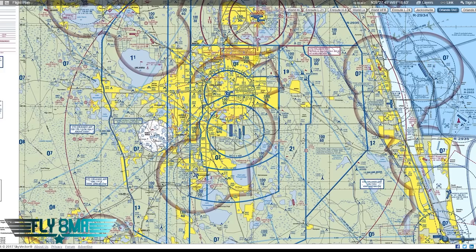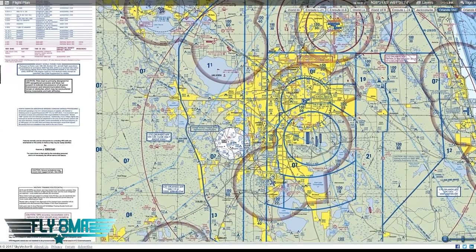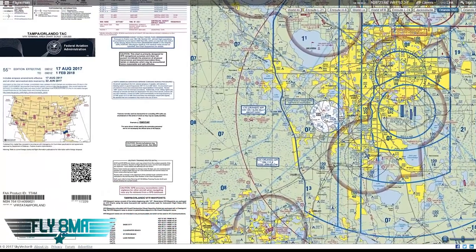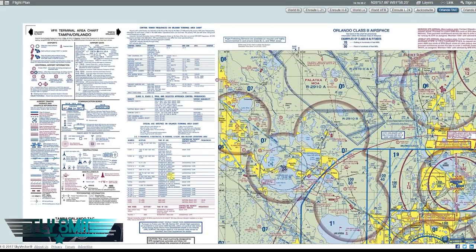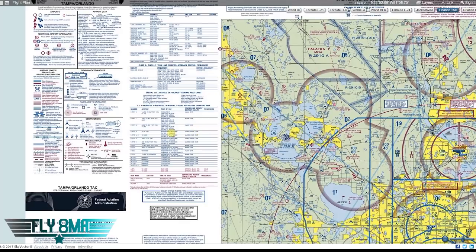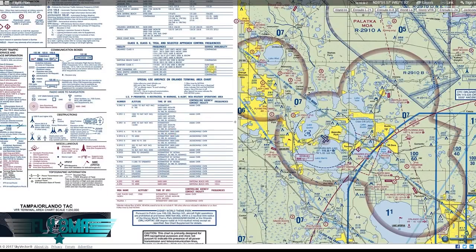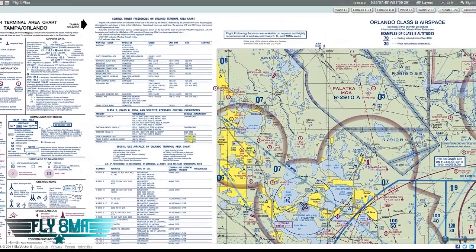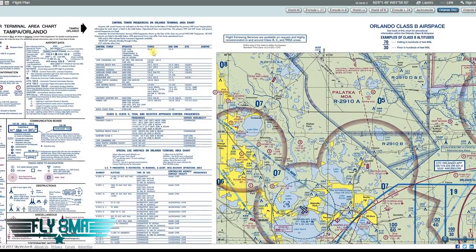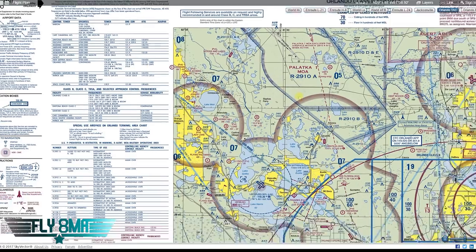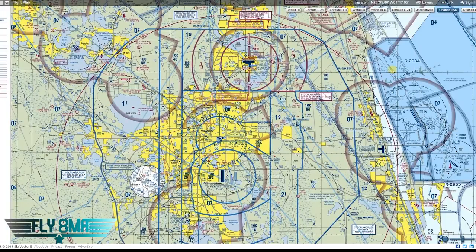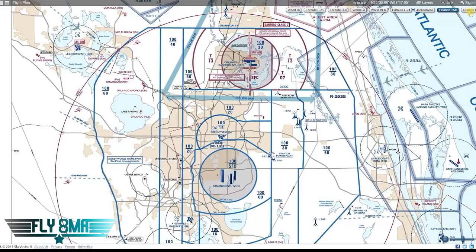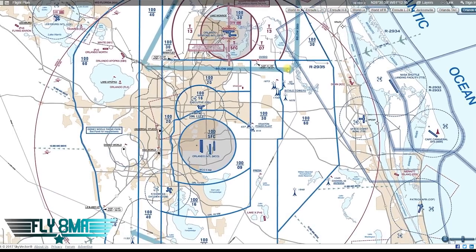A flyway chart is very similar to TAC charts. TAC charts have all that great information, extra legend information, special use airspace, and even tower frequencies, ground control frequencies, and ATIS for all the airports on the TAC chart.